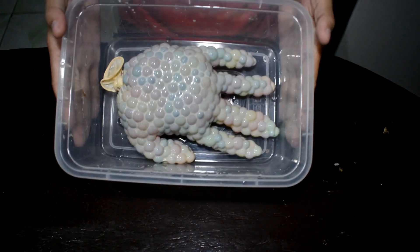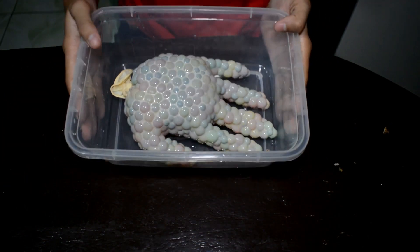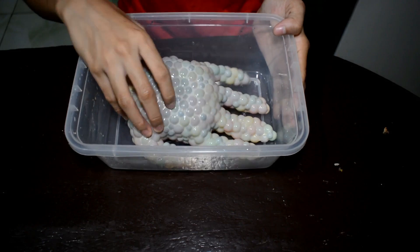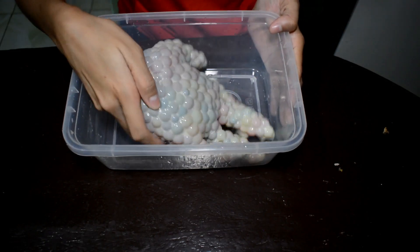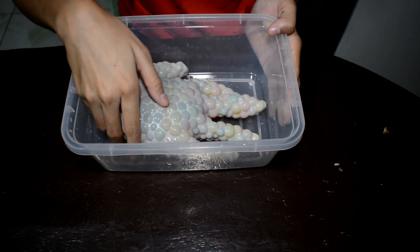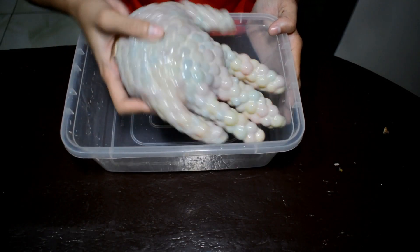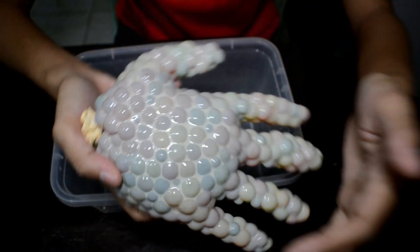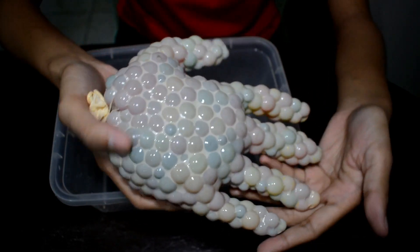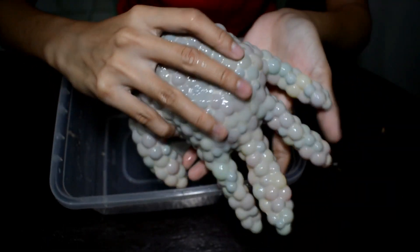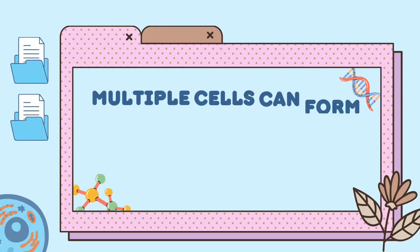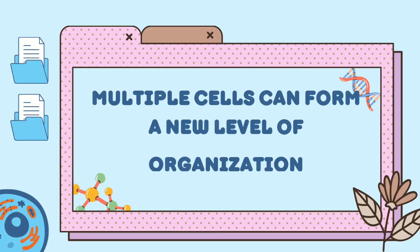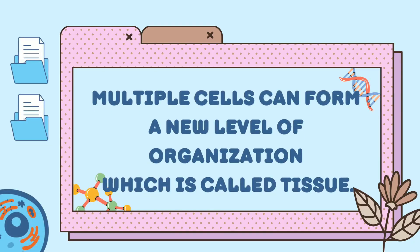Because of the growth of the Orbeez balls, they start to compress and they occupy the space inside the glove. We can conclude that multiple cells can form a new level of organization which is called tissue.